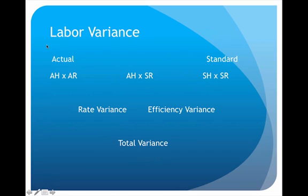Now we need to learn how to calculate the labor variance. Again, it's all in the setup. On the labor variance, the far left hand side is the actual point: actual hours worked times the actual rate paid. The far right hand side is the standard: standard hours that should have been worked times the standard rate that should have been paid. The midpoint is actual hours times the standard rate. In between the first two points is the rate variance, in between the last two points is the efficiency variance, and then we have a total variance.